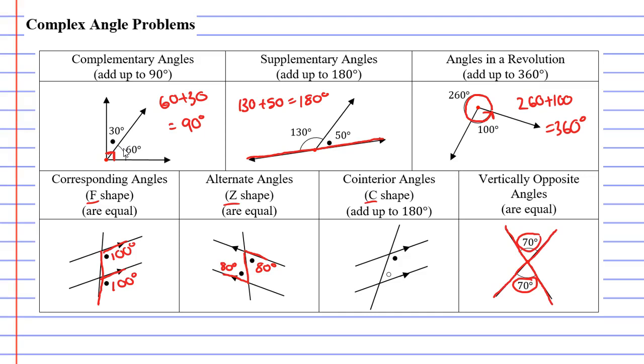Finally we have co-interior angles which make a C shape. When I draw around the angles it looks a bit like the letter C. This one's slightly different because rather than being the same they add up to make 180.